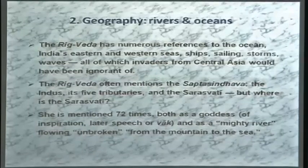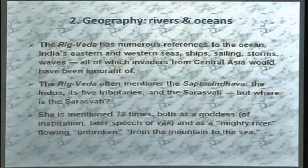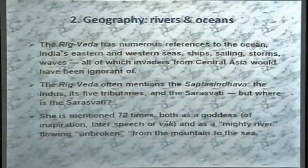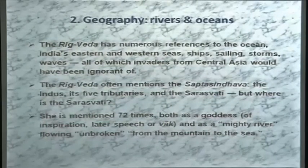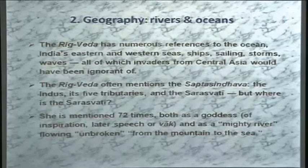The geography of the Rig Veda is basically the Sapta Sindhava — seven rivers. Scholars have identified these as the Indus (Sindhu) plus its five tributaries, totaling six, and the Saraswati. The Nadistuti Sukta, the hymn in praise of rivers, names 19 rivers. Strikingly, the hymn starts from the Ganges and travels westward — Yamuna, Saraswati, Sutudri (Satlej), Parushni, Ashikni (Chenab) — ending with the Sindhu and three Afghan tributaries: the Kabul, Gumal, and Kurum rivers.